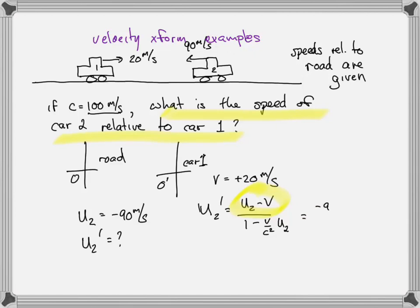Let's go ahead and plug in. So we've got U2, which is minus 90. V is positive 20. And so on top, we would have the minus 110. But that's going to be divided by some number, which better be bigger than one because the maximum C can be is 100 meters per second here. So 20 over 100 squared times minus 90. Got to carry those signs. U2 is minus 90. And that sign is really important because without the negative sign, the bottom wouldn't be greater than one, and the answer wouldn't make sense. You'd get a speed faster than the speed of light.